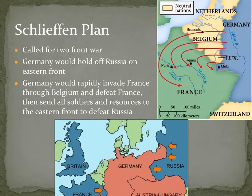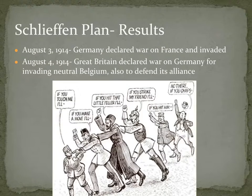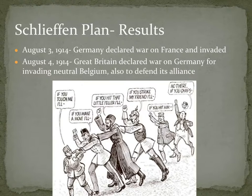The problem was that Germany was invading countries it was not yet at war against — there was no prior declaration of war. On August 3, 1914, Germany declared war on France and invaded through Belgium. The next day, Great Britain declared war on Germany for invading neutral Belgium and to defend its alliance. The alliance systems drew countries into the war that were not even a part of the original conflict — this all started with Slavic nationalism in the Balkans, which had little to do with Britain and France.